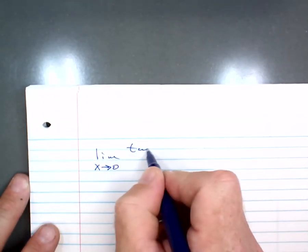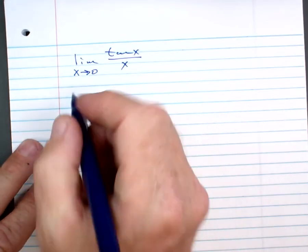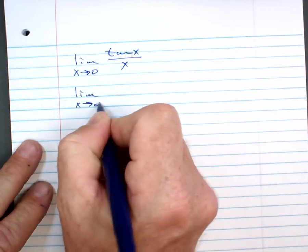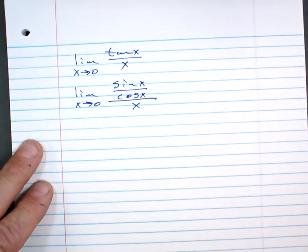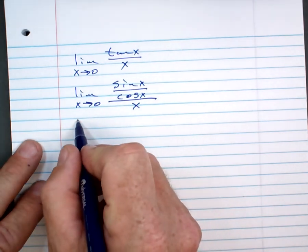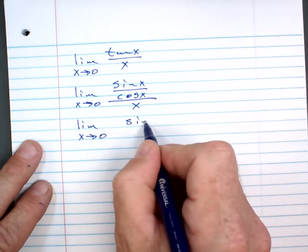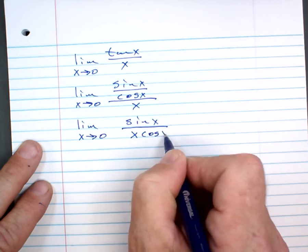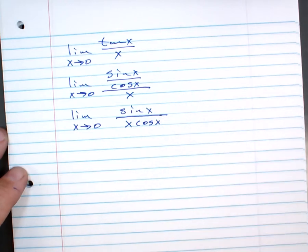Here's the first one, because I know you guys want time to work. The limit as x approaches 0 of the tangent of x over x. I think that's number 1, right? So, that's the same as the limit of x over 0 of the sine of x over the cosine of x all over x. Would you agree?